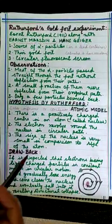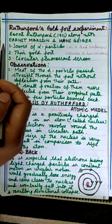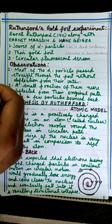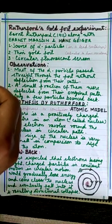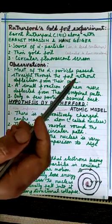Dear students, J.J. Thomson's plum pudding model failed to explain many experimental observations about atoms including stability.